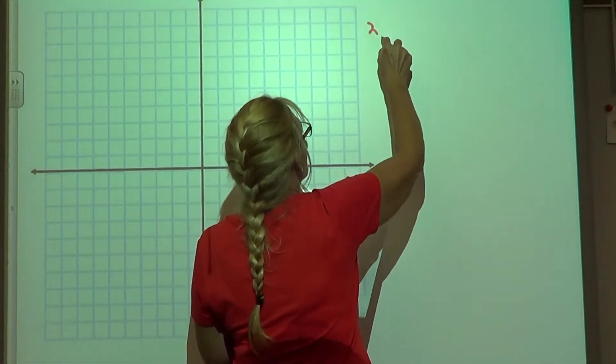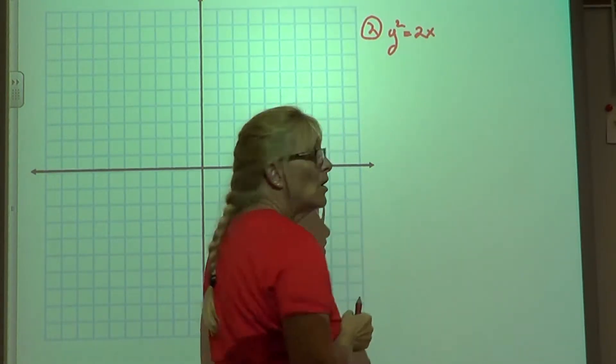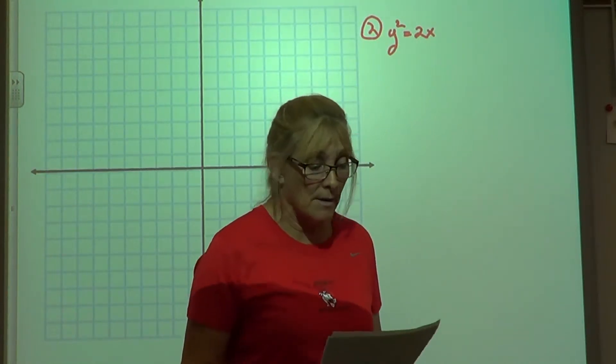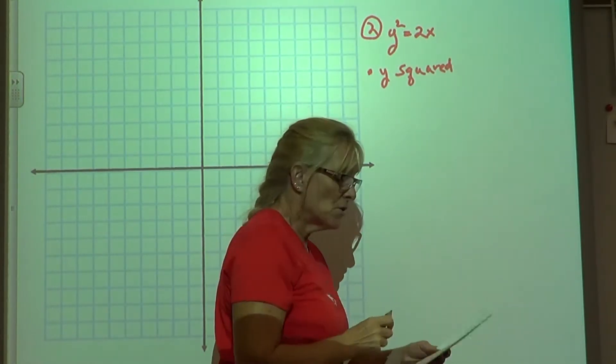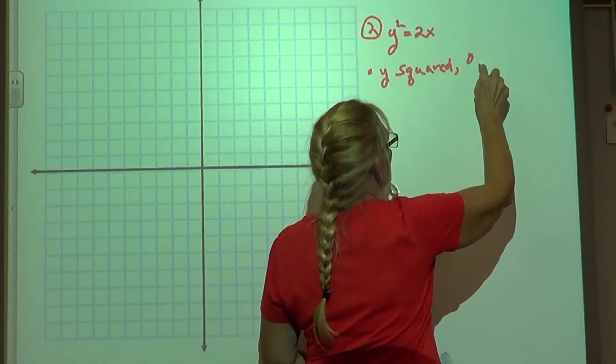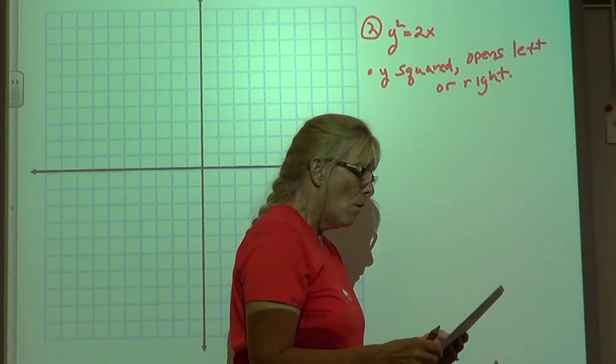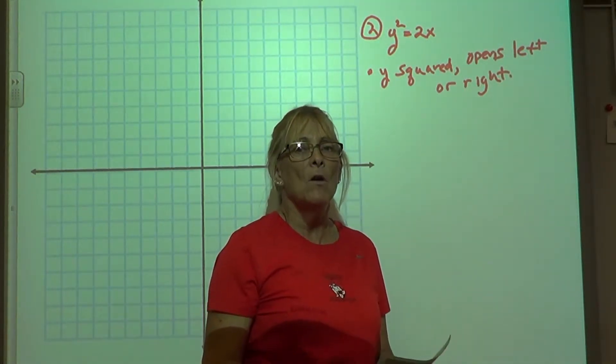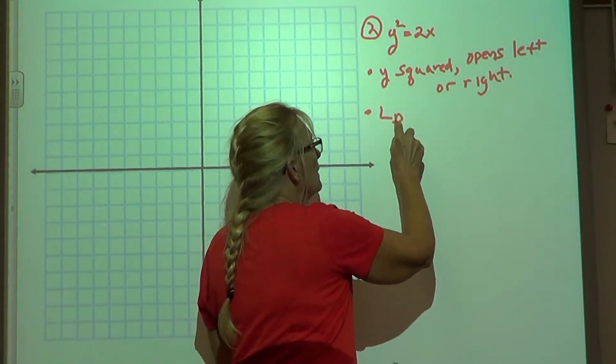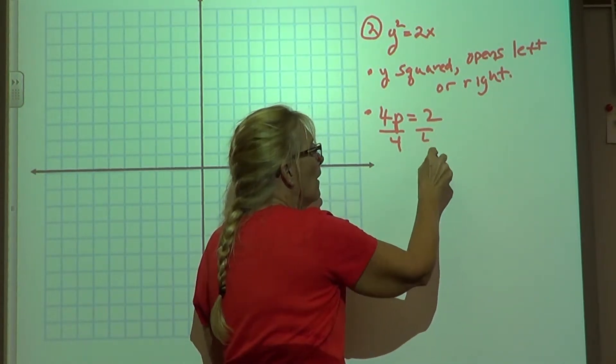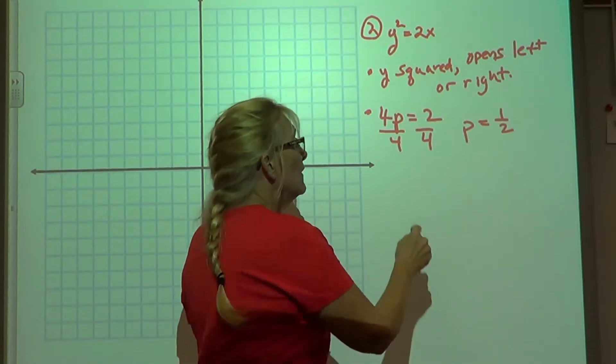Number 2, the equation is y squared equals 2x. In regards to this equation, we realize that the y is squared this time and not the x. So since y is squared, it must open left or right. When it opens left or right, we realize that this is going to have a different orientation. So our next thing is to look at our 4p units. So 4p is equal to 2. If we divide by 4, p is then equal to 1 half. A very small amount. It's a half a unit away. And since p is positive, it opens to the right.